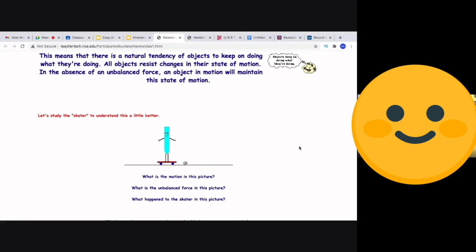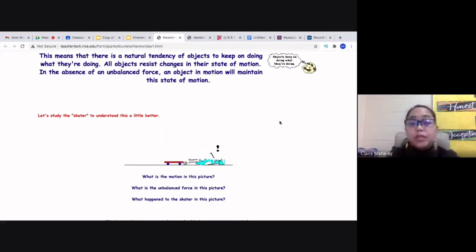Very good. So this is one application of Newton's first law. That's precisely the reason why you should be wearing your seatbelts. That is the reason why seatbelts are very important. If you don't have your seatbelts, if you're not wearing your seatbelts, then you are going to have an accident. Your head might get slammed in any part of your car or you might be propelled. You might fly out of the car. So that's exactly the reason why you should be wearing your seatbelts.